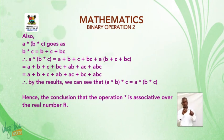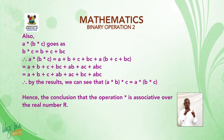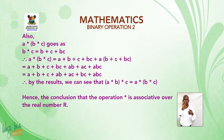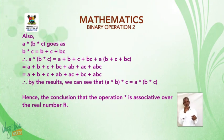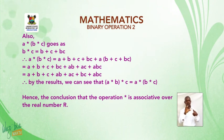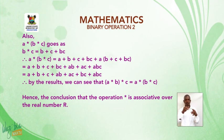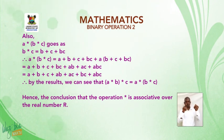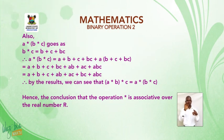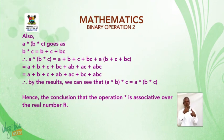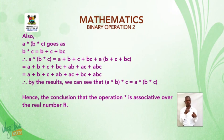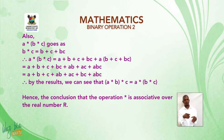Also, a★(b★c): first, b★c = b + c + bc. Then a★(b★c) = a + (b + c + bc) + a(b + c + bc) = a + b + c + bc + ab + ac + abc = a + b + c + ab + ac + bc + abc.